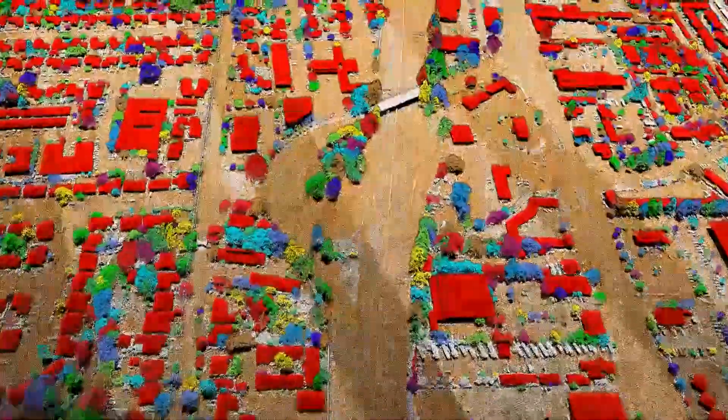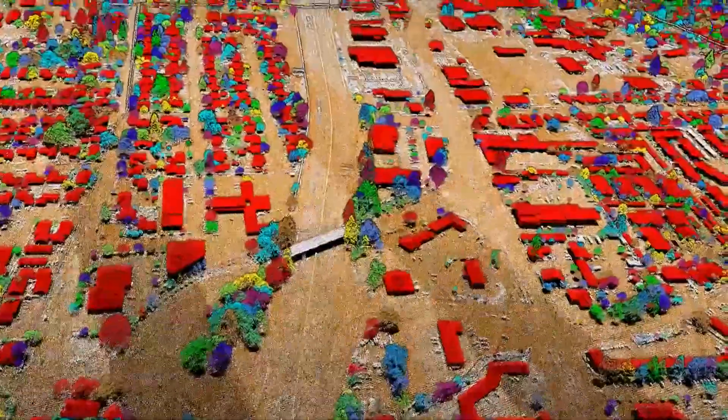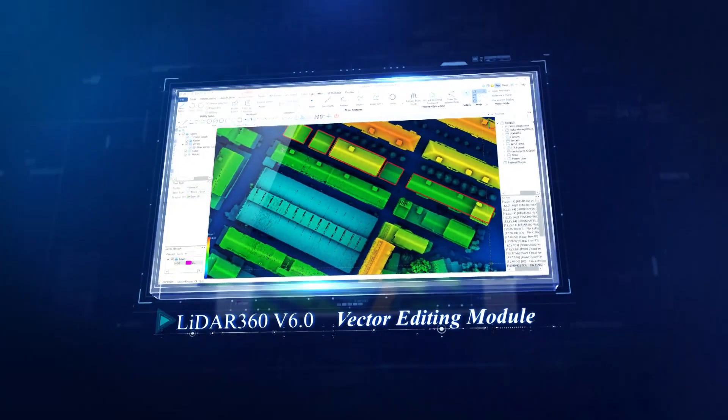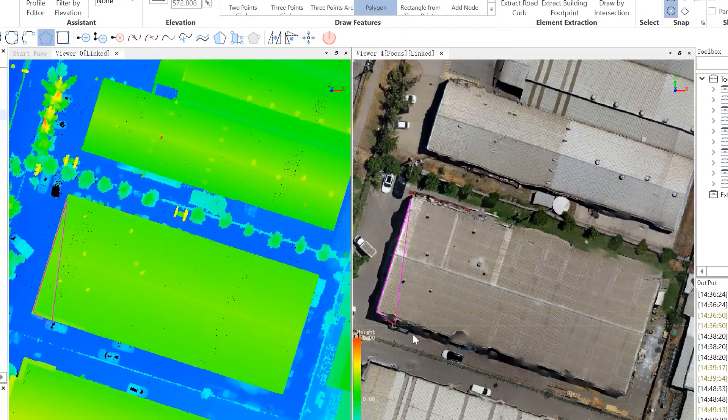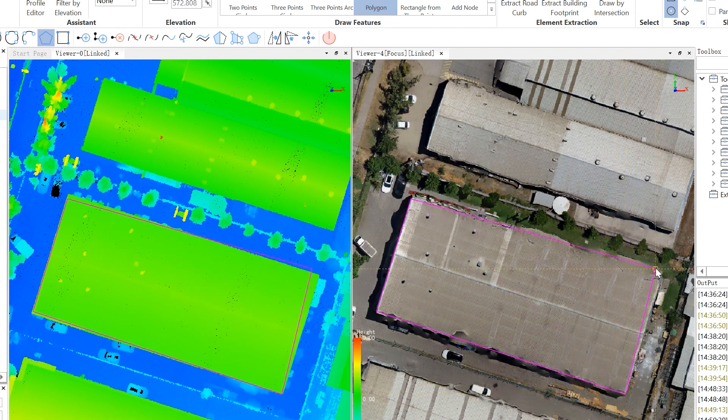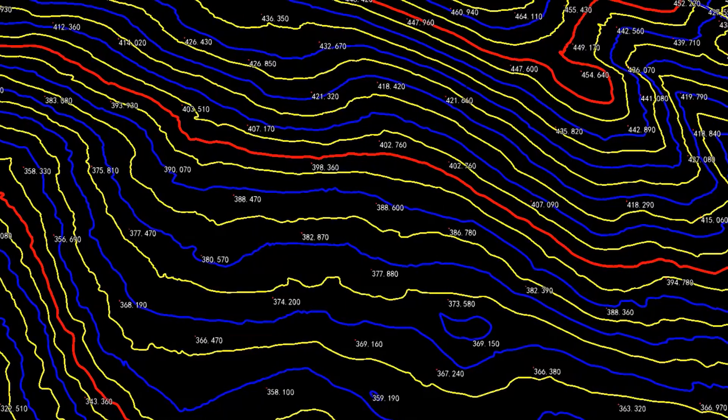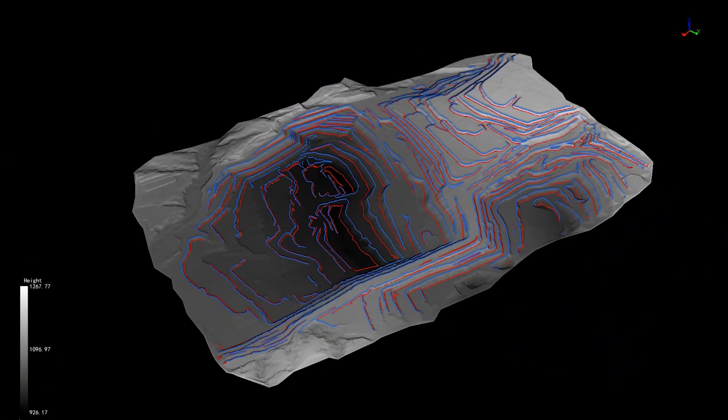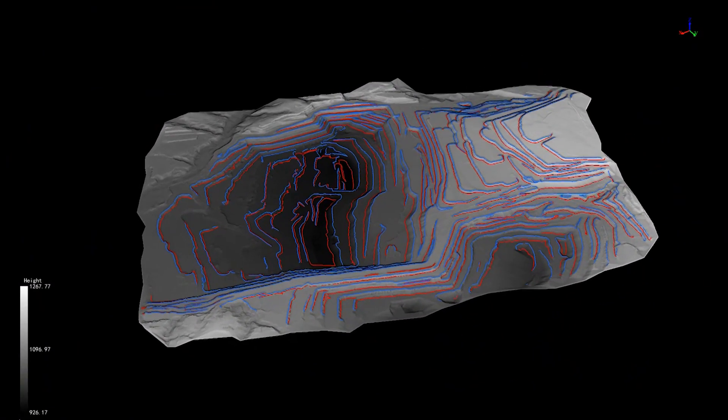Support one key full process operation. Obtain deliverables in one click. The vector editing module provides rich editing tools. It can perform refined processing on terrain contour lines, mine slope top and bottom lines, building outlines and more.